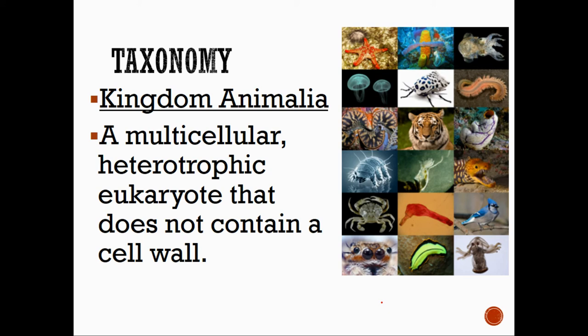We are a eukaryote, which would make sense since we are in domain Eukarya, meaning we have a nucleus. Our cells have a nucleus and membrane-bound organelles. We do not contain a cell wall. If you go back to biology, one of the differences from animal cells and plant cells is plant cells have a cell wall. Animal cells do not. So those are the only requirements to be in Kingdom Animalia. Made up of many cells, we eat things, we have a nucleus, and we don't contain a cell wall.